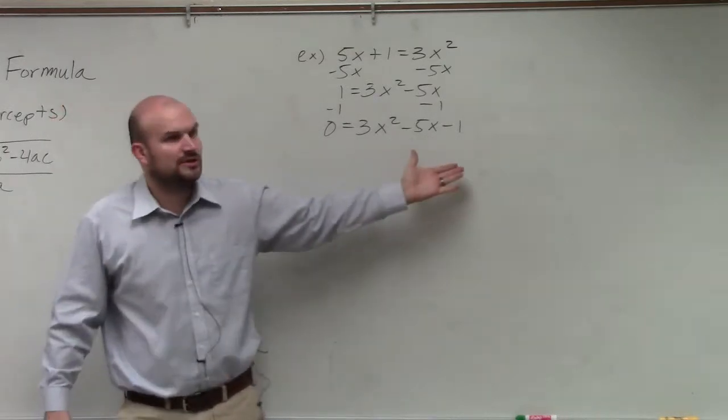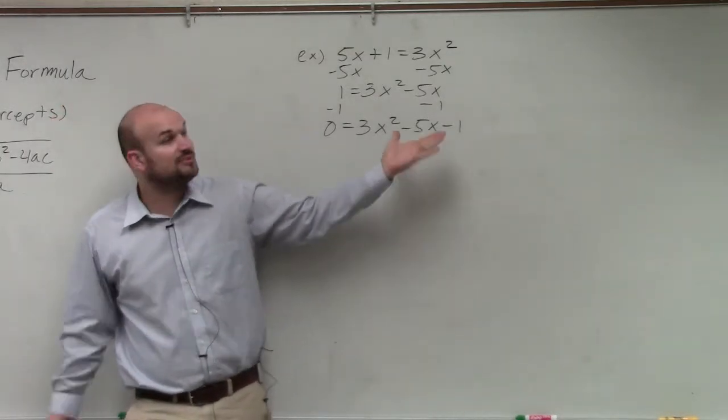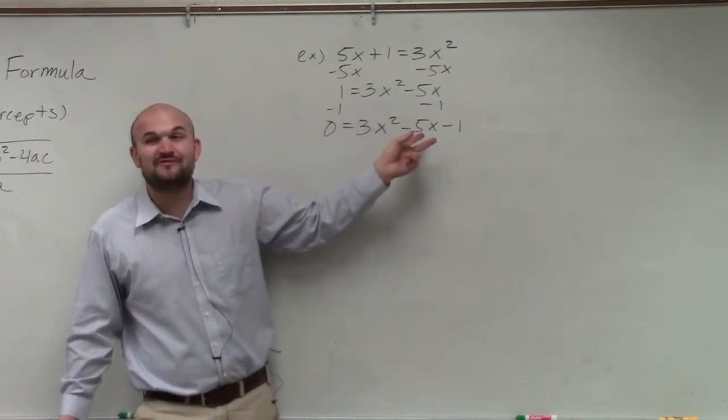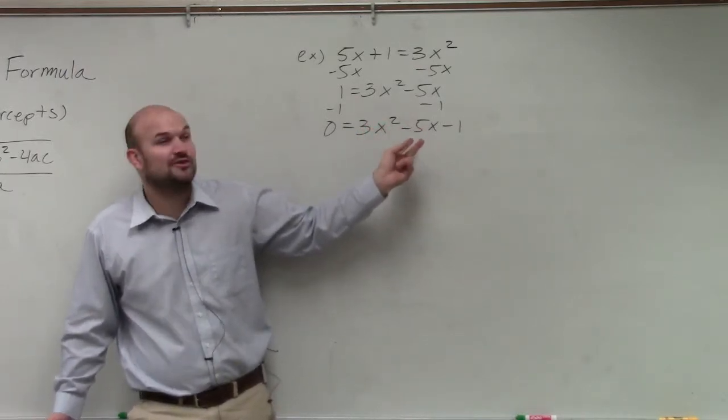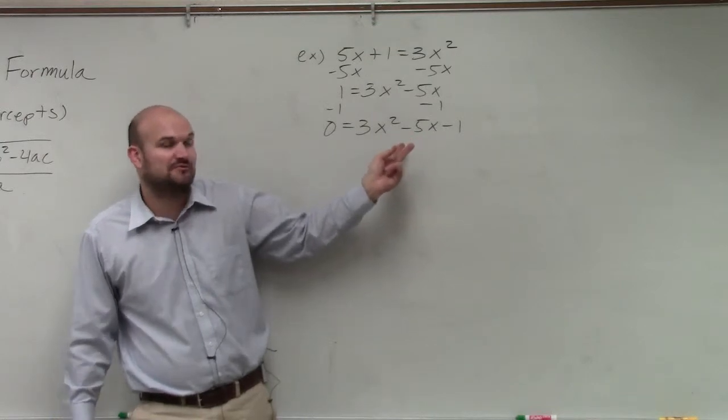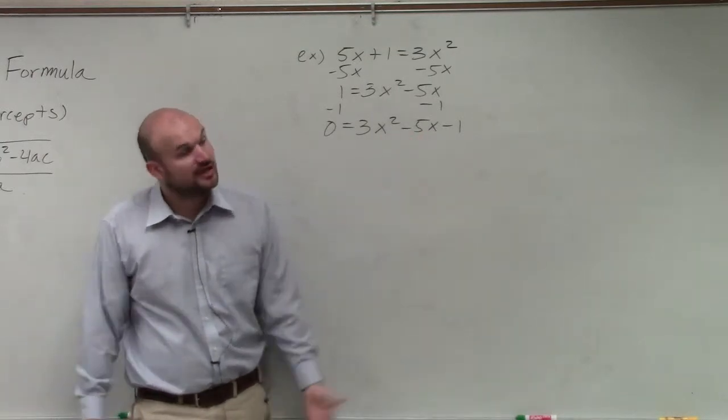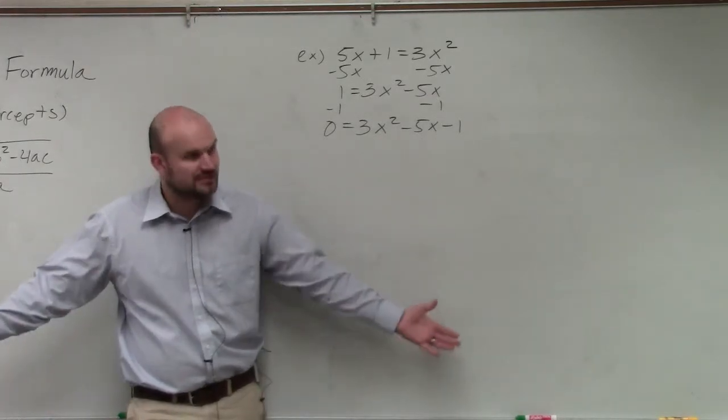Then what is the other method we learned how to find the solutions? Completing the square. But remember, you have to factor out a 3 out of a 5, you're going to have fractions. And we all know completing the square, we don't like doing completing the square with fractions. We can do it, it's just not really fun, right? So the other way we can do that is by using quadratic formula.